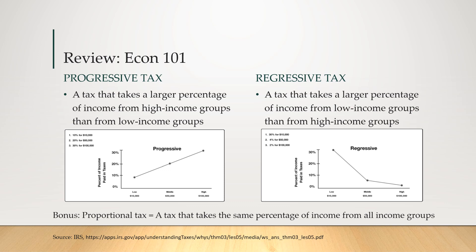On the other hand, a regressive tax takes a larger percentage of income from low-income groups than from high-income groups. Our sales tax tends to be quite regressive because people at the lower end of the economic scale have to spend more of their income on basic goods and services — clothing, food, toothpaste — which are subject to sales tax. Payroll taxes also tend to be relatively regressive. As a bonus, a proportional tax takes the same percentage from all income groups — that's what people mean by a flat tax.